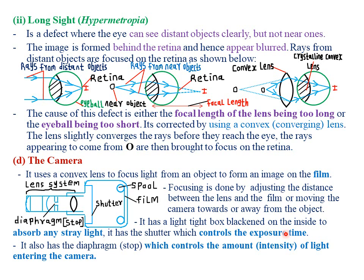The camera also has a shutter which simply controls the exposure time. It also has a diaphragm, also called a stop, which controls or regulates the amount of light entering the camera — it regulates the intensity of light entering the camera. The lens system consists of the lens and the diaphragm. As shown in this diagram, the camera has a spool, the film, the shutter, the convex lens, and the diaphragm which controls the amount of light entering the camera.